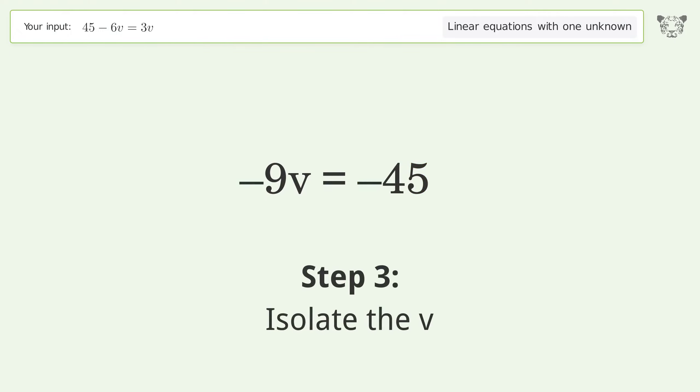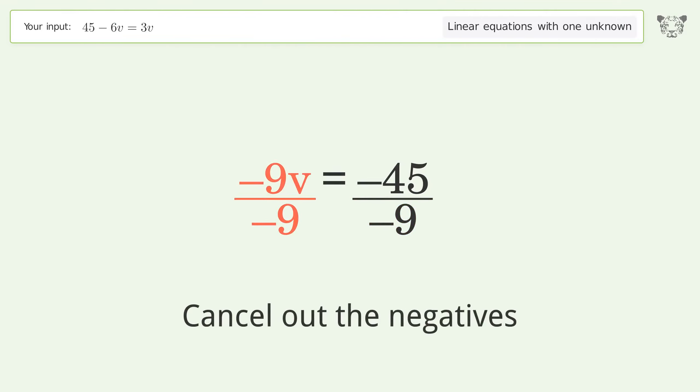Isolate the V. Divide both sides by negative 9. Cancel out the negatives.